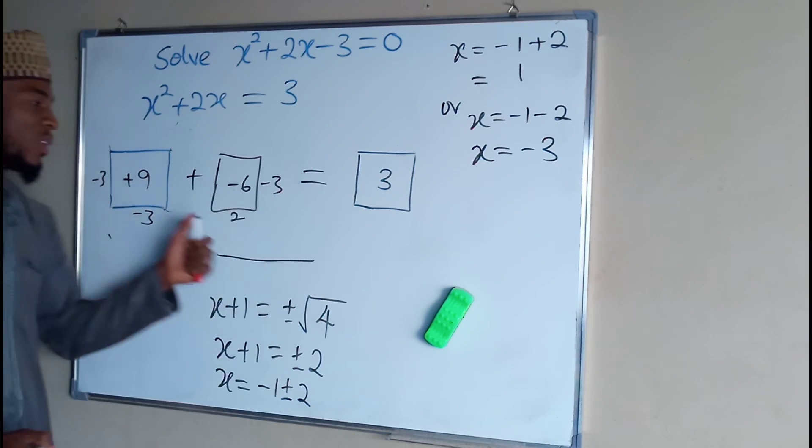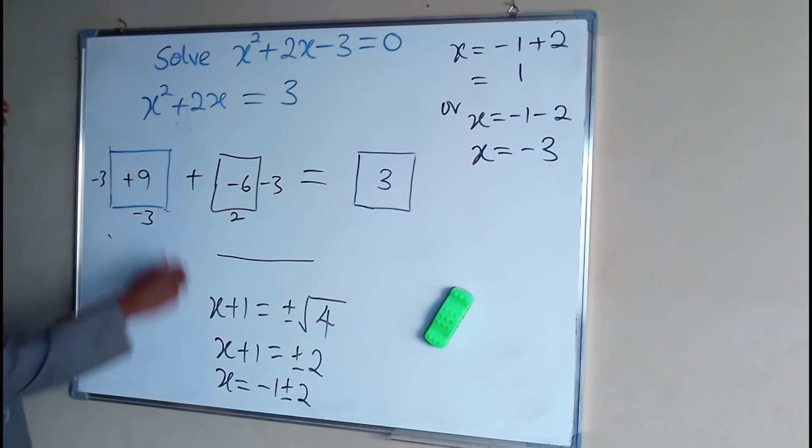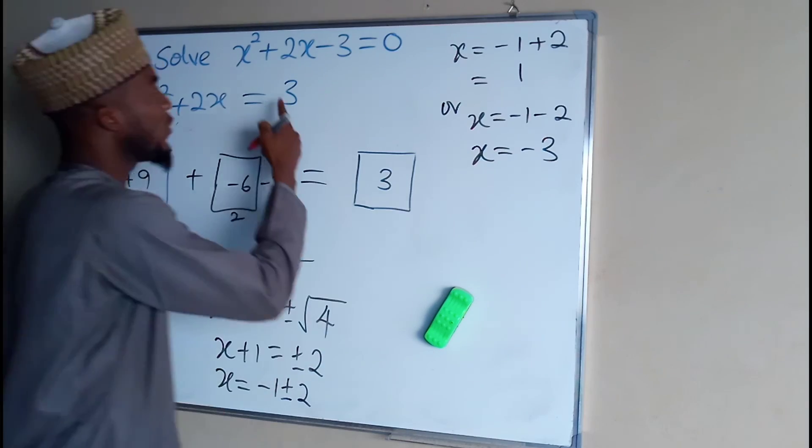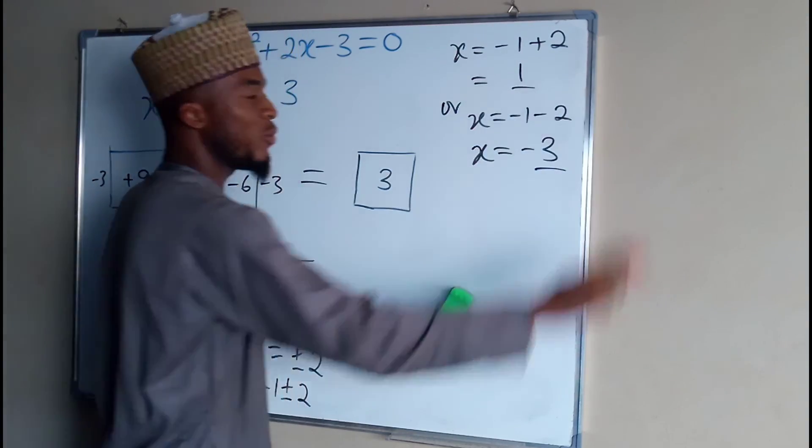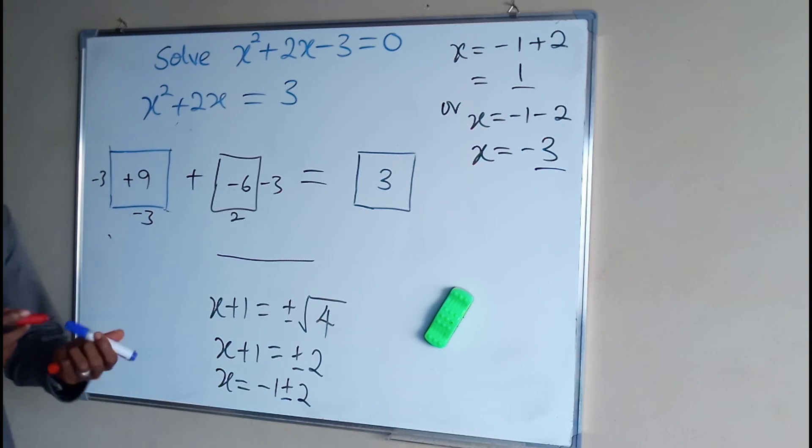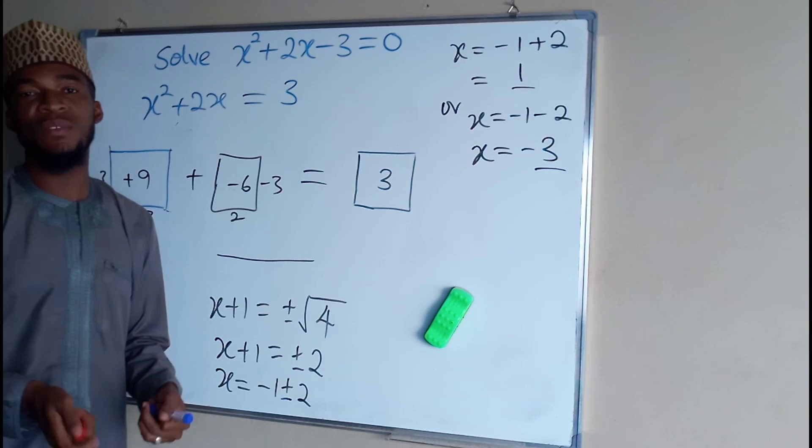Each value you pick, you test here, you are going to find this 3. So each one of them can satisfy the equation. Hence, the roots of this quadratic equation are either minus 3 or positive 1. Thank you for watching. If you are new here, kindly subscribe to my channel for more exciting videos.